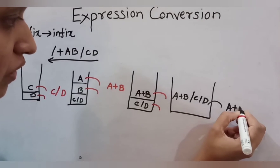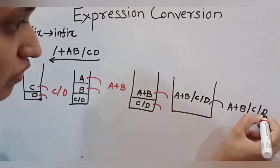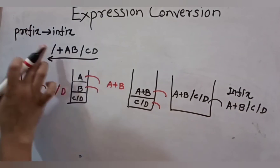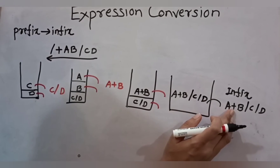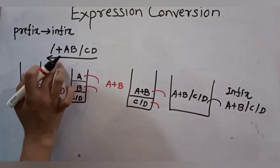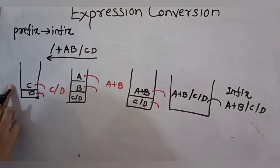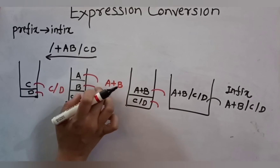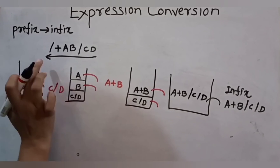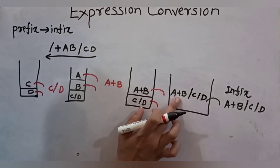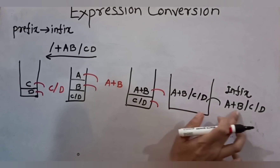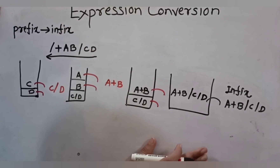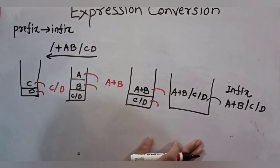Our final expression is A plus B slash C slash D, where operators are in between the operands — this is the final infix expression. In this way we have converted the prefix expression into infix format. To summarize: scan from right to left; push operands onto the stack; when an operator comes, pop the topmost two operands, form an infix expression, and push it back. Repeat until the expression is over. The final result on the stack is the desired infix output. This is prefix to infix conversion using the stack data structure.